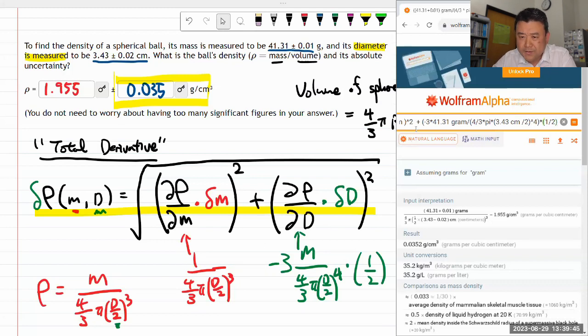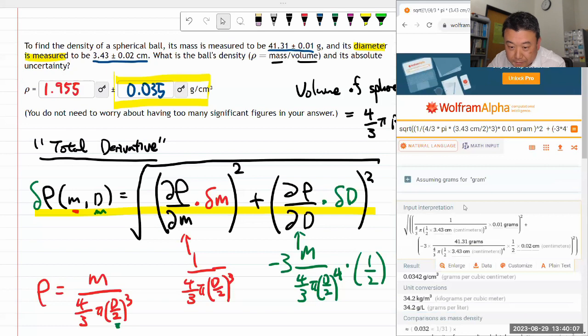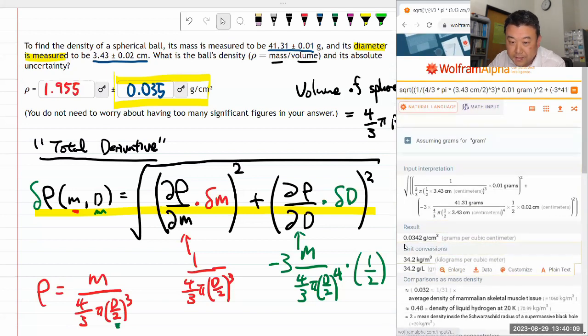I don't worry about the minus sign because squaring will get rid of that. Multiply this with the uncertainty in diameter, that's 0.02 cm, and all of that gets squared. I think that's the whole expression. Let's press enter and make sure the units come out right.